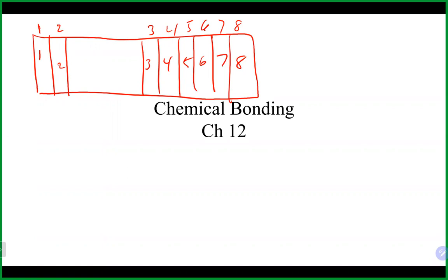You don't usually want to write your electron configuration to figure it out — just go to the periodic table and whatever group it's in, that's how many valence electrons it has. The other way is to write the electron configuration, like we talked about in Chapter 11: something like 1s2, 2s2, 2p4.